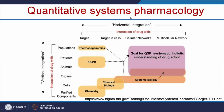Another important concept is quantitative systems pharmacology (QSP), which involves the systematic and holistic understanding of drug action. It is divided into vertical integration and horizontal integration. In vertical integration, when you make a new drug, you study the effect of purified compounds on cells, then on organs, then on animals, patients, and populations. In horizontal integration, you study the interaction of the drug with a target, its interaction with cellular networks, and the molecular mechanism of the particular drug.